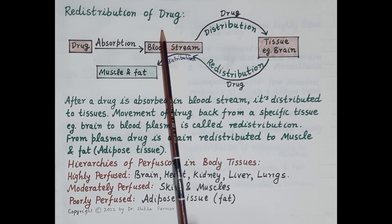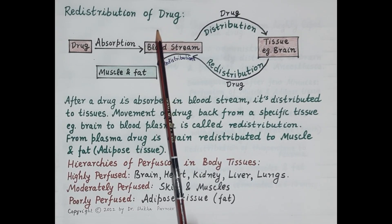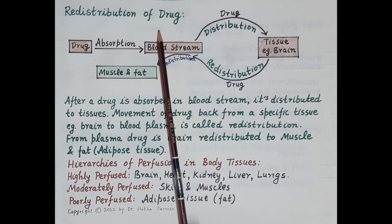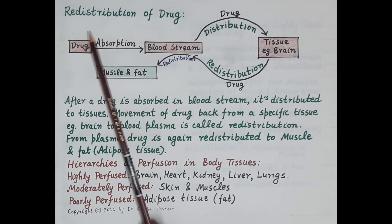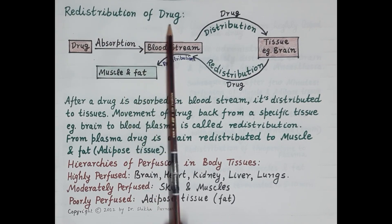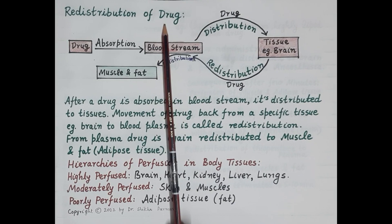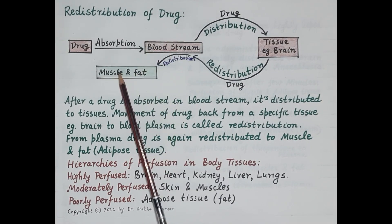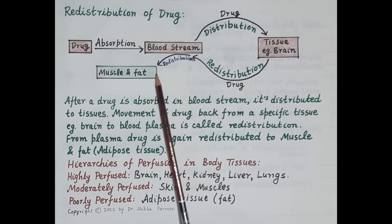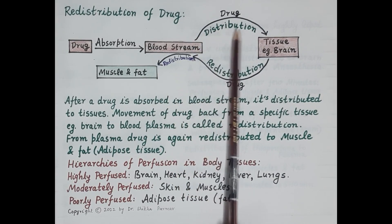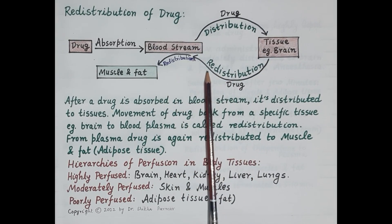Hello students. As we all know, pharmacokinetics is the study of administration, distribution, metabolism, and excretion of a drug by the body. In this video, we will try to understand the concept of redistribution of drug. Redistribution of drug is one of the most important factors responsible for the distribution of drugs. This video is the fifth in the series of videos on pharmacokinetics.